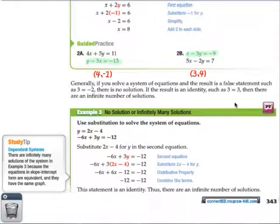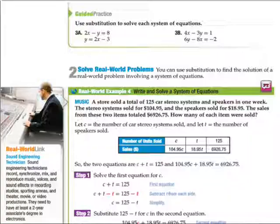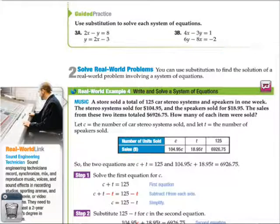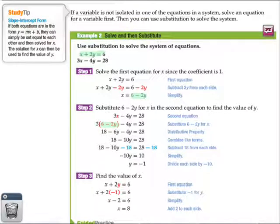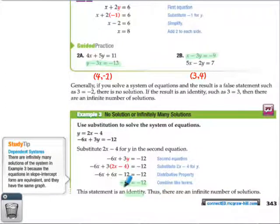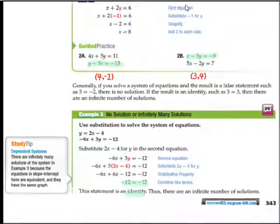With systems, if we substitute and end up with a true statement like -12 = -12, that's called an identity and there are infinitely many solutions. In the same regard, if we end up with an untrue statement like -11 = -12, there would be no solution.